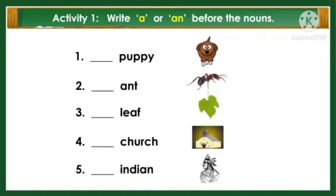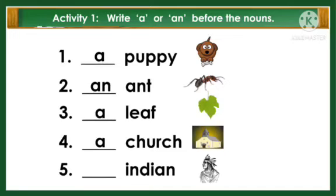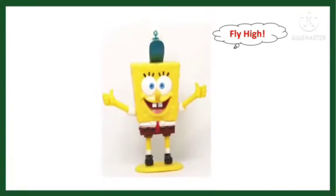Next activity: write 'a' or 'an' before the noun. You can write it on your paper. Can you show me the answer — is it 'a' or 'an'? A puppy. An ant. A leaf. A church. An Indian. Is your answer the same as my answer? That's correct, that's good!